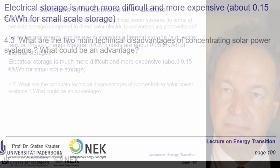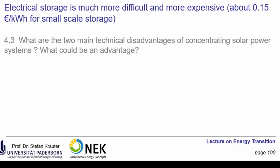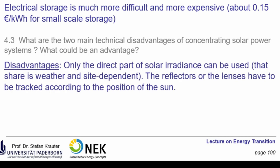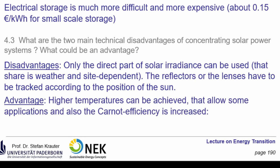Question three: what are the two main technical disadvantages of concentrating solar power systems, and what could be an advantage? The disadvantage is that only the direct part of solar irradiance can be used, which is weather- and site-dependent. In Germany, the share of diffuse irradiance is quite high. Additionally, you have to track the reflector to follow the sun and permanently clean the reflectors, making construction expensive. The advantage is that you can achieve higher temperatures, which allows a higher Carnot efficiency — one minus T-ambient divided by the collector temperature in Kelvin.